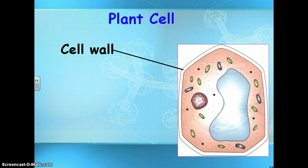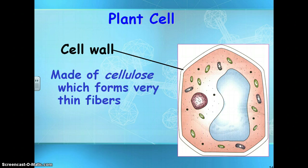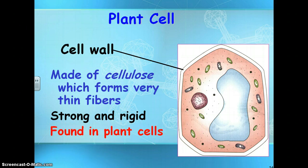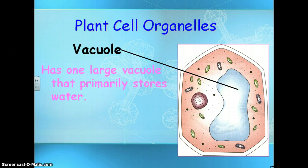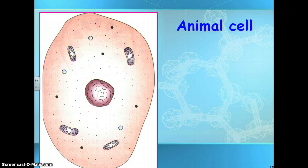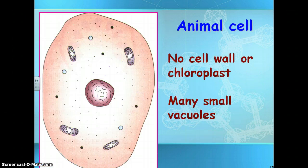In a plant cell, you have a cell wall made of cellulose. It's very strong and rigid, only found in plant cells, and it gives the cell structure and rigidity. In a plant cell, you have one large vacuole that primarily stores water. In an animal cell, you do not have any cell wall or chloroplasts, but there are many small vacuoles.